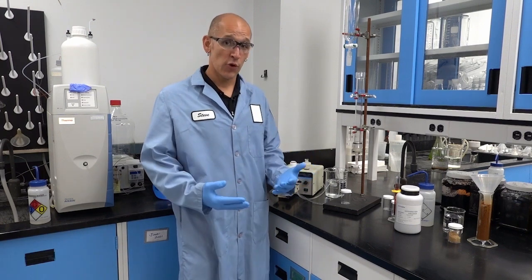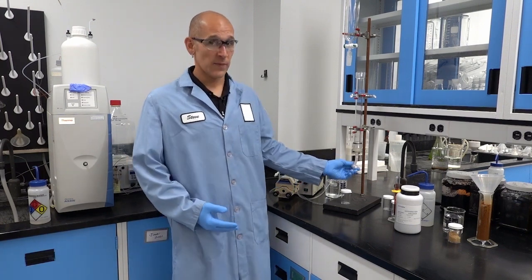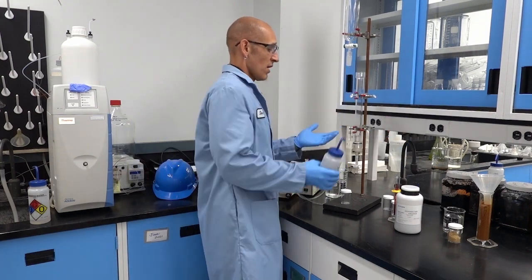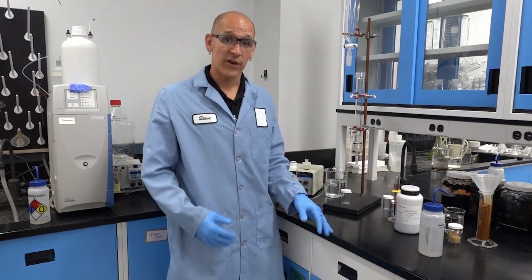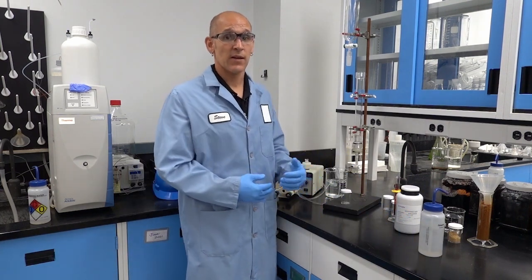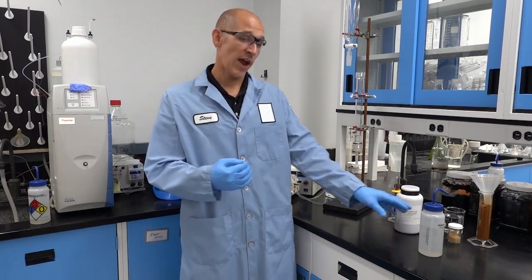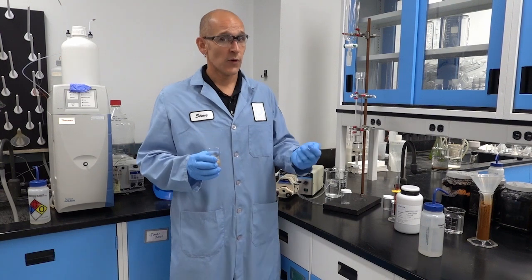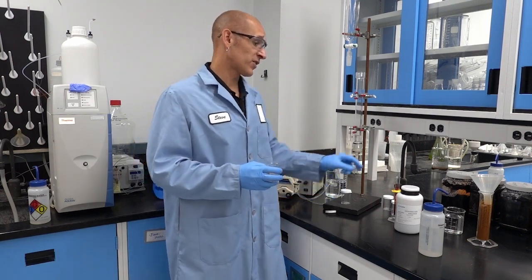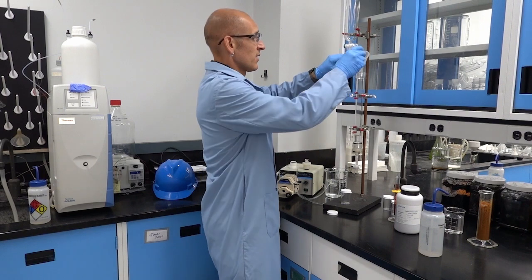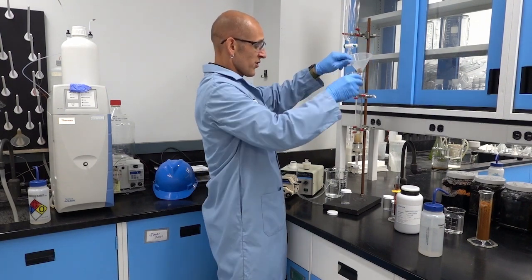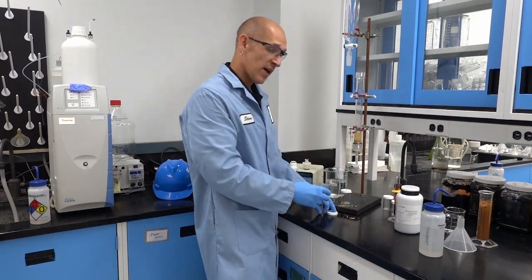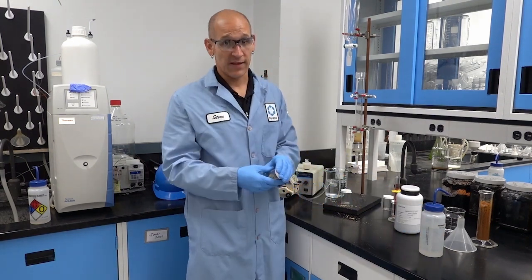First thing you want to do when you go to load your resin is close the bottom stopcock in your column and add a small amount of water. The reason we add this small amount of water is so that as you load your media, it prevents any air pockets from forming as the media settles. It's always a good idea for the first thing to add to your column is a small amount of sand. The sand is inert and acts as an underdrain so that you get the best use out of the resin you're adding to the column.